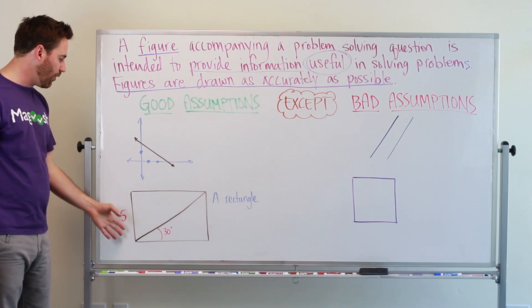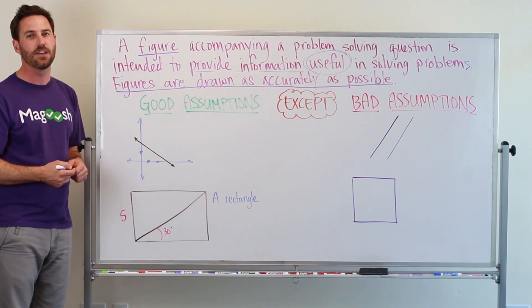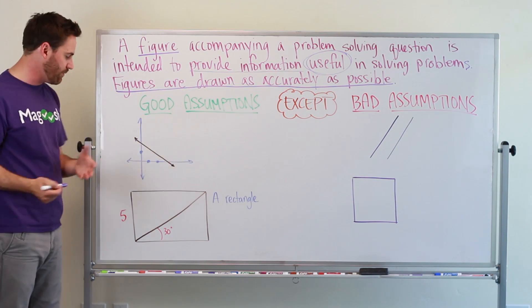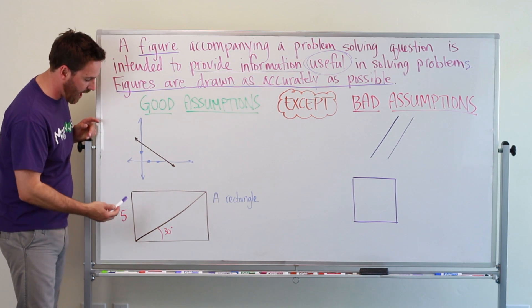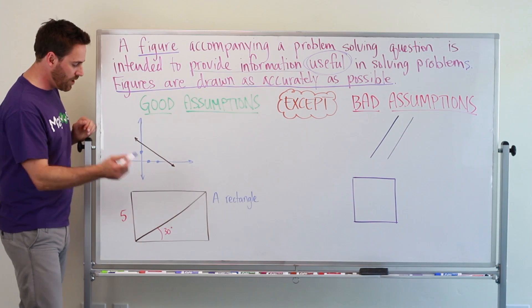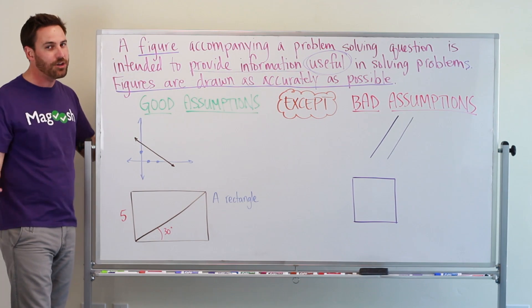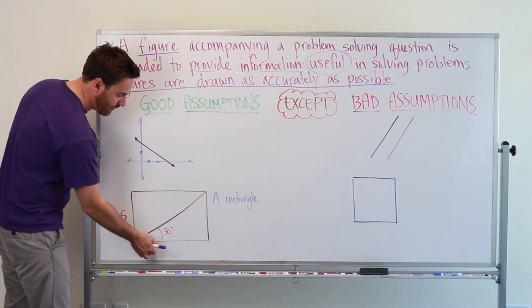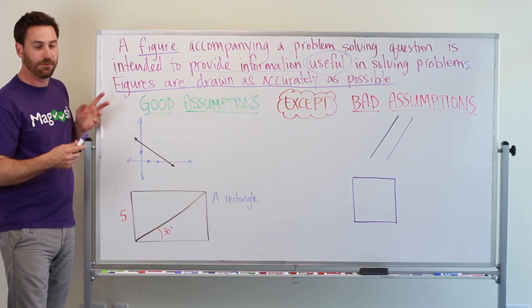Also, if you're told you have a rectangle, and they've given you a shape that looks like this, there's things that you can safely assume about this rectangle. For one, they've labeled this side as length 5. We know that this length is longer, it visually looks longer, so I can assume that this length and this length are going to be bigger than 5.